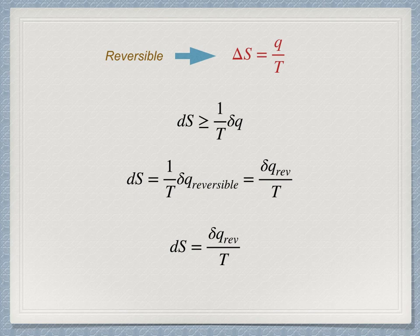We can now select some specific processes and integrate this expression to find new relations for entropy changes in those cases. Remember that an underlying requirement in all cases is that the changes occur reversibly. The approach is to find expressions for the delta q differential under these various conditions.